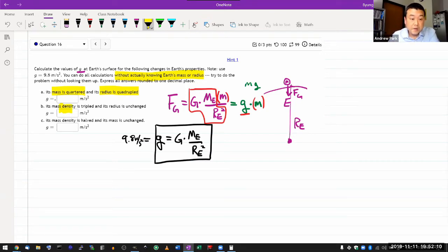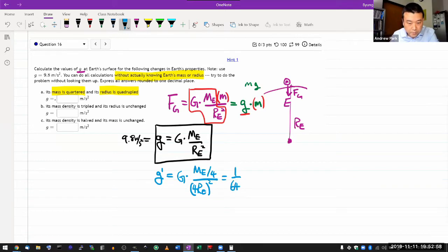It says how will this change if the mass is quartered and the radius is quadrupled. So I'm going to be dealing with a new value of g. For this new value of g, the mass changes as described—quarter, so divide by 4—and radius changes as described, it's quadrupled, and I need to remember to square. So we combine all these numerical factors, which is 1/4 times 1 over 4 squared, so it's 4 to the third power, 1 over 64 times GME over RE squared.